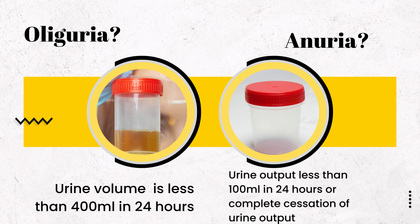What is oliguria? When the urine volume in the previous 24 hours does not exceed more than 400 ml, then this condition is called oliguria.